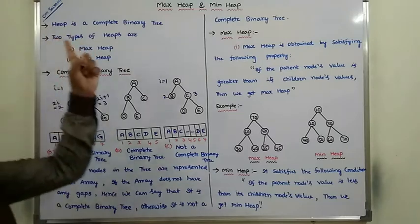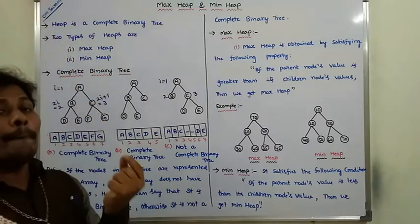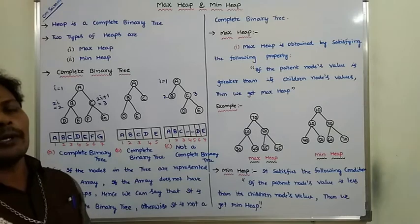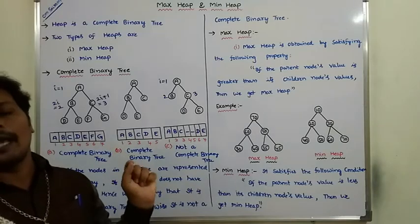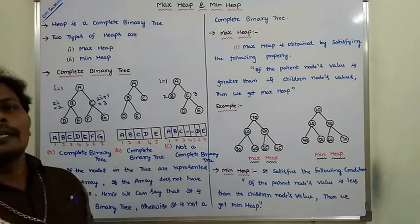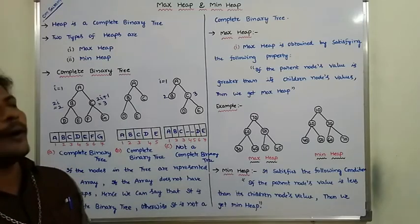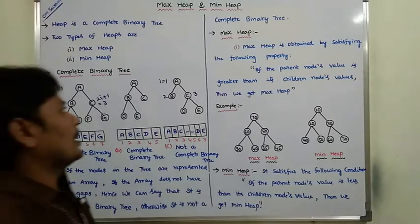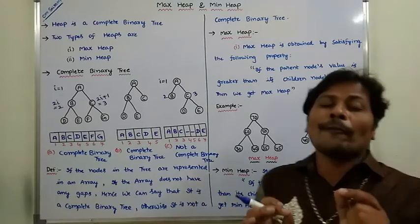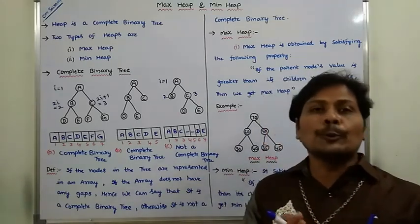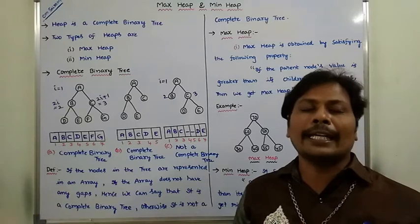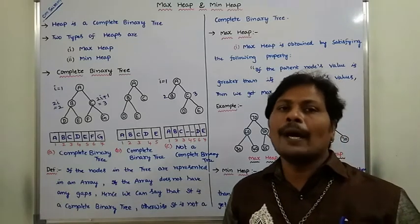Once we understand the procedure of complete binary tree, then we go for heap. Heap satisfies the complete binary tree property. Except the last level, all the nodes in the tree have two children. Heaps are two types: one is maximum heap and the second one is minimum heap.